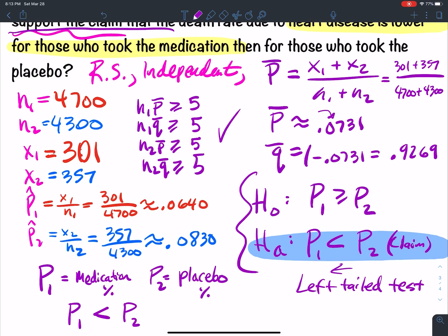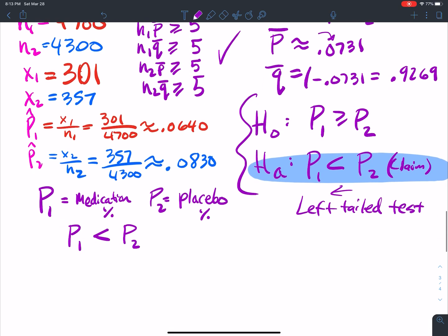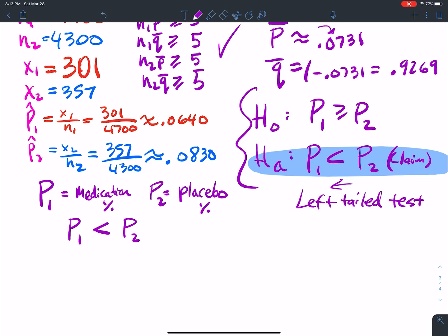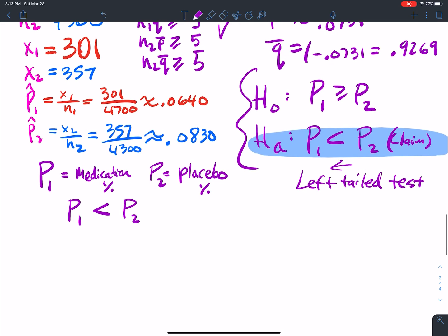So the death rate due to heart disease is lower for those who took the meds versus those who took the placebo. That's what we're trying to prove here. That's the claim. So what are we going to do? We're going to run through our test.